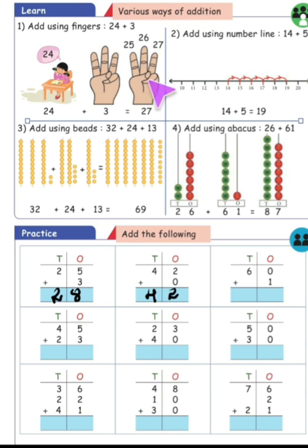You can use the finger method, number line method, beads method, or abacus method. 60 plus 1 is 61. 45 plus 23, the answer will be 68.